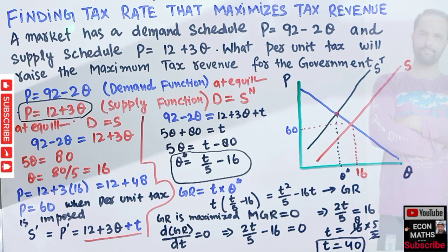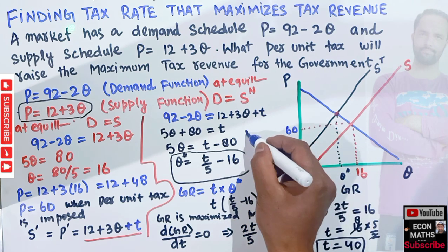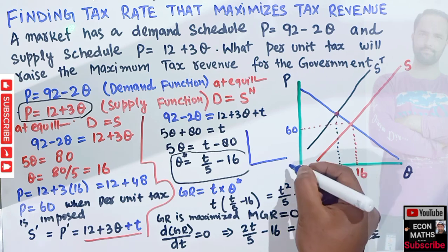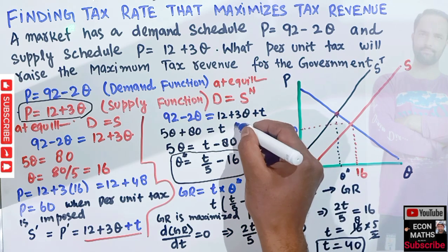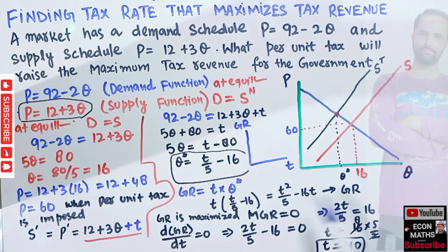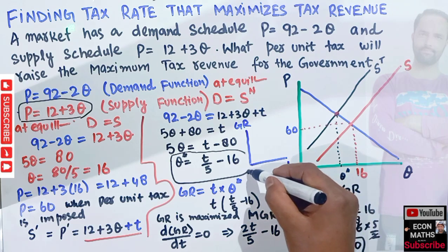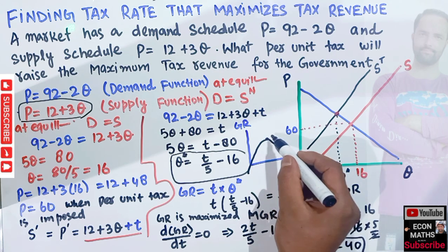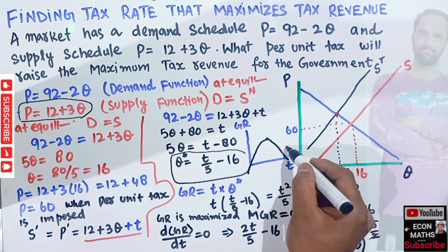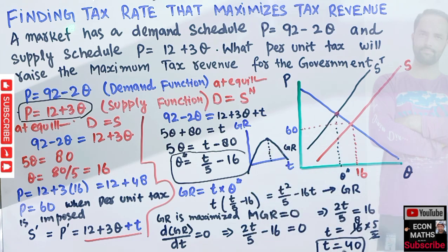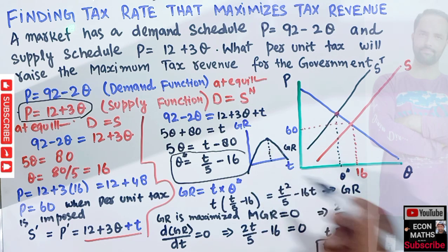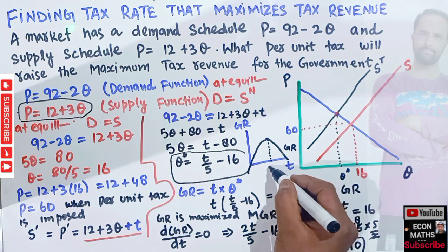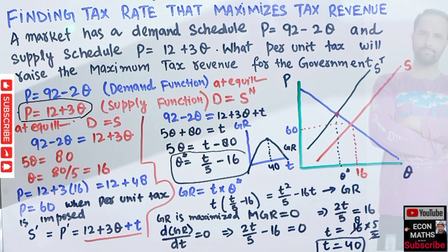We can also illustrate this graphically. With tax rate on one axis and government revenue on the other, the revenue function is quadratic. At the point where the slope equals zero, government revenue is at its maximum, which occurs when the tax rate equals 40. I hope this video was clear — thank you.